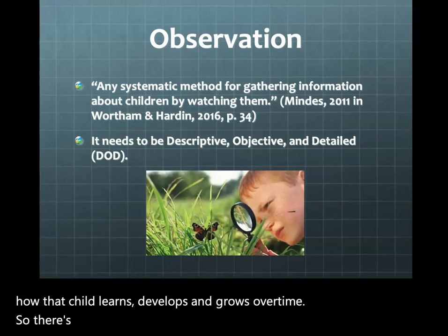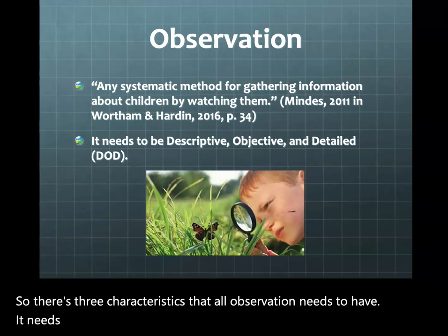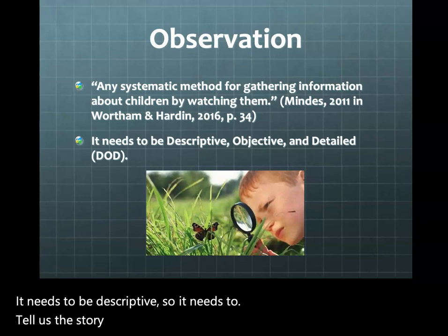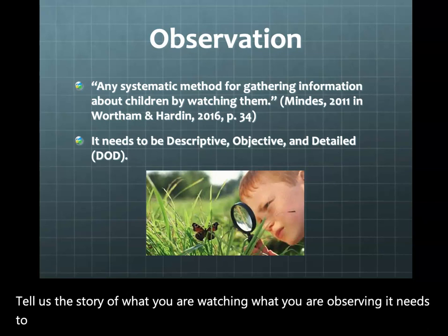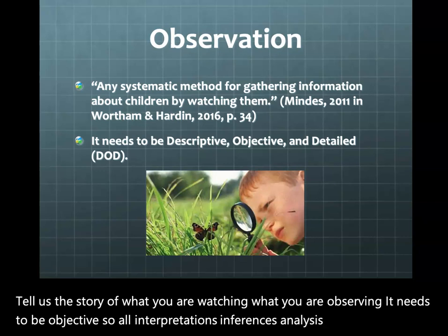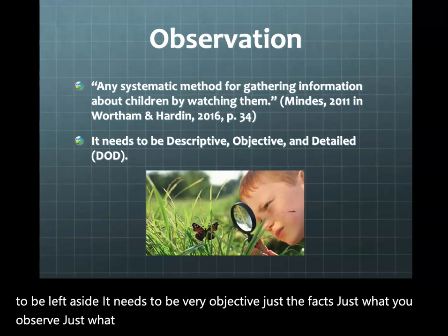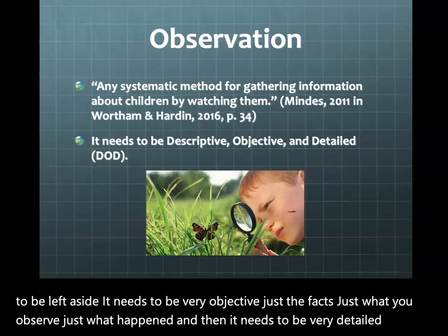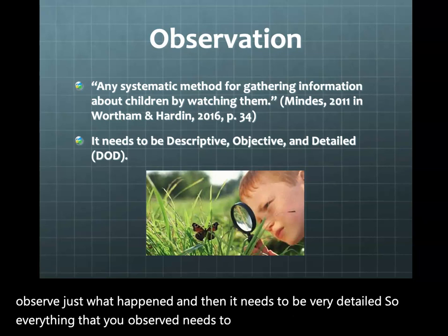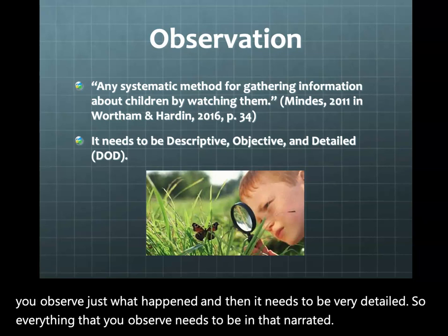There are three characteristics that all observations need to have. It needs to be descriptive — it needs to tell the story of what you are watching and observing. It needs to be objective — all interpretations, inferences, analysis, and subjectivities need to be left aside; just the facts, just what you observe, just what happened. And then it needs to be very detailed — everything that you observe needs to be in that narrated description of the observation.